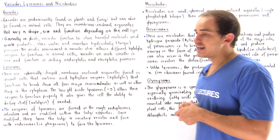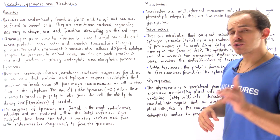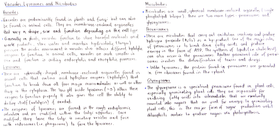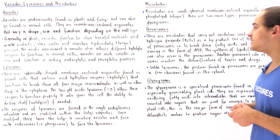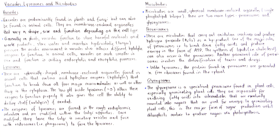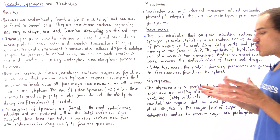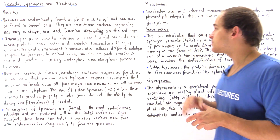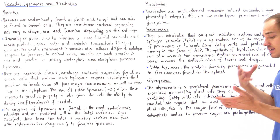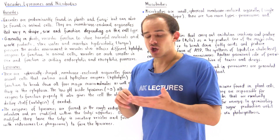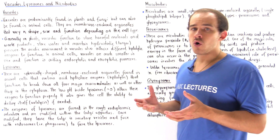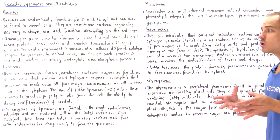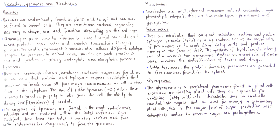Not only can fatty acids be broken down inside peroxisomes, but peroxisomes can also synthesize lipids such as cholesterol. Another important function is to detoxify the cell from different types of toxins and drugs — for example, alcohol. Peroxisomes are especially important in liver cells.